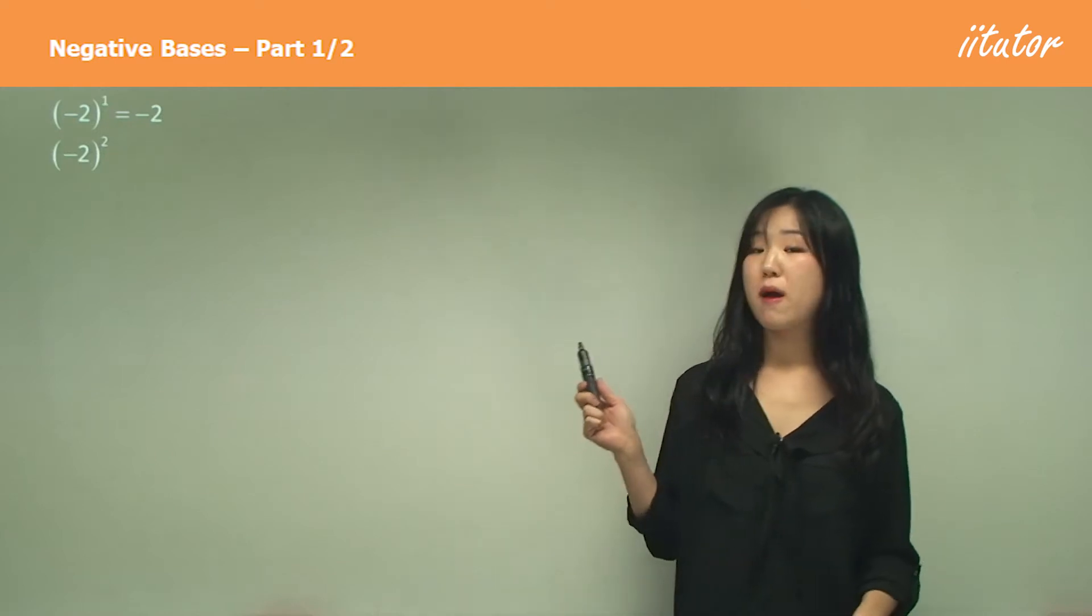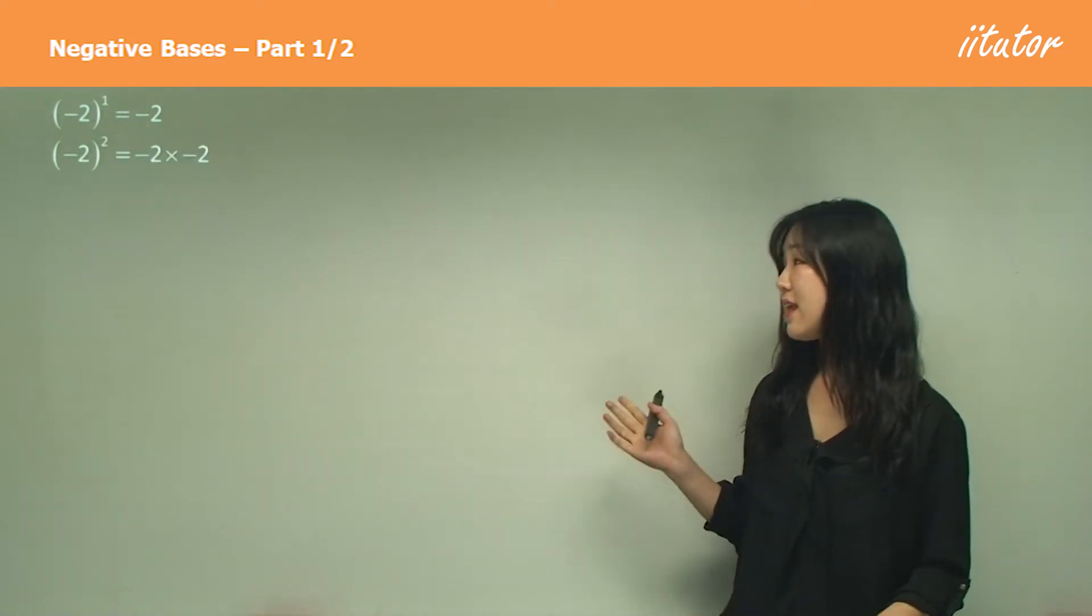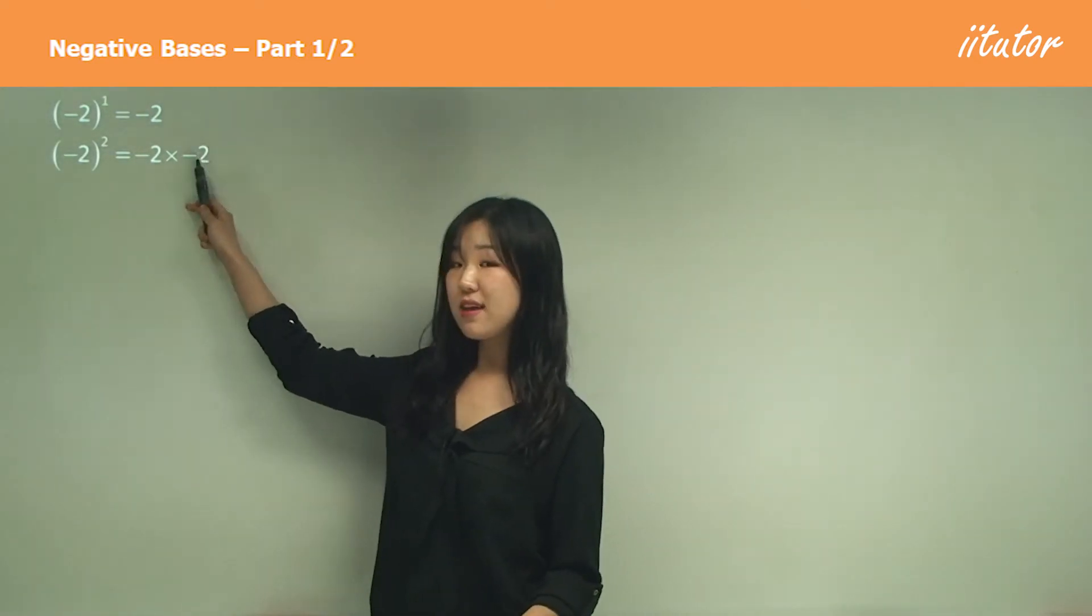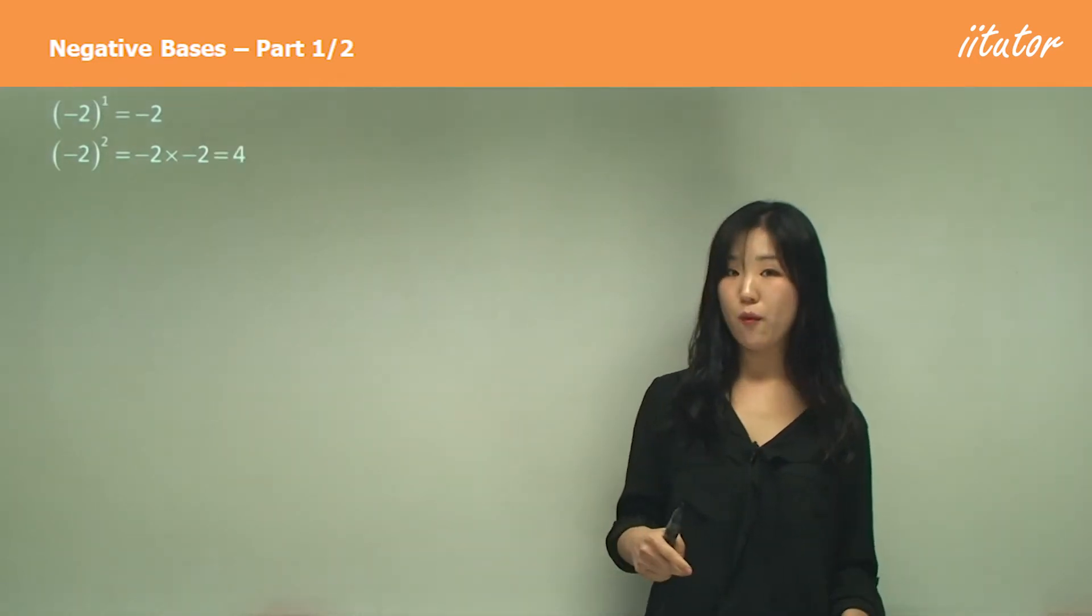Now what if I have negative 2 to the power of 2? Negative 2 to the power of 2 is the same as negative 2 times negative 2. Now negative times a negative is a positive, so it's going to be positive 4.